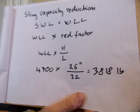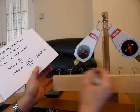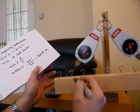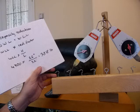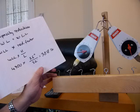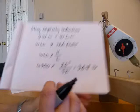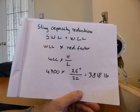So if your load is configured in a way that the headroom is 26 inches and the length of the sling is 32 inches, that means that its 4700 pound capacity is now reduced to only 3800 pound capacity. So if you're trying to lift a 4000 pound load with this configuration, it's not gonna work.